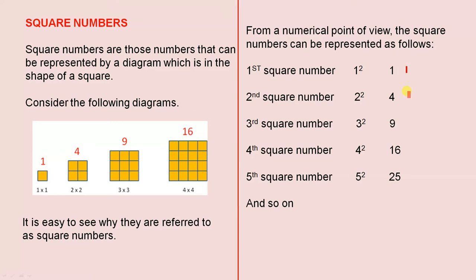The second square number is two squared to give you four. The third square number is three squared to give you nine. The fourth square number is four squared to give you sixteen. And the fifth number is five squared to give you twenty-five, and so on.